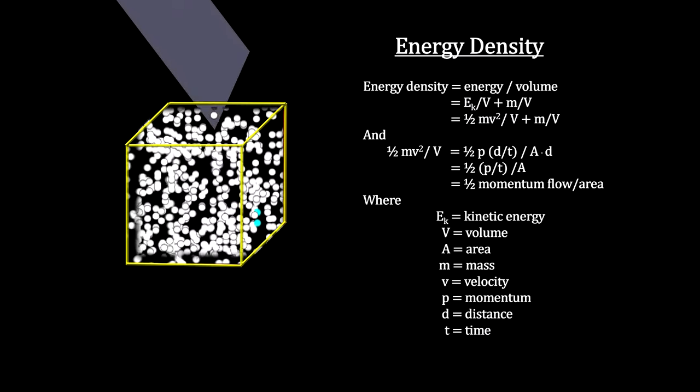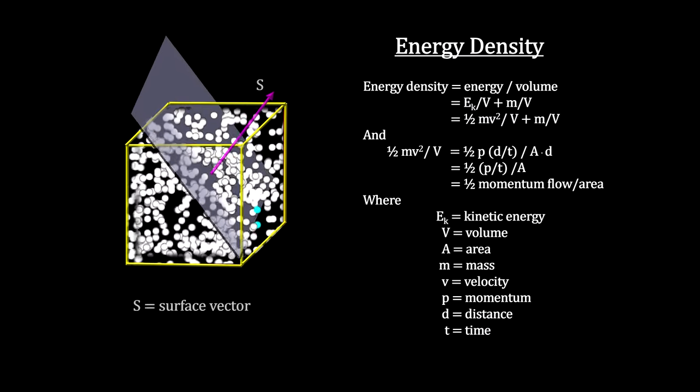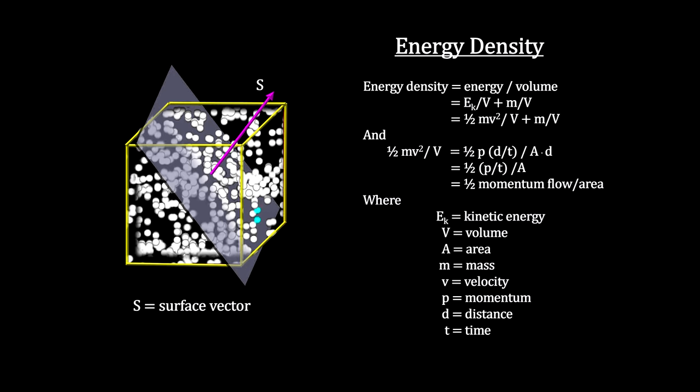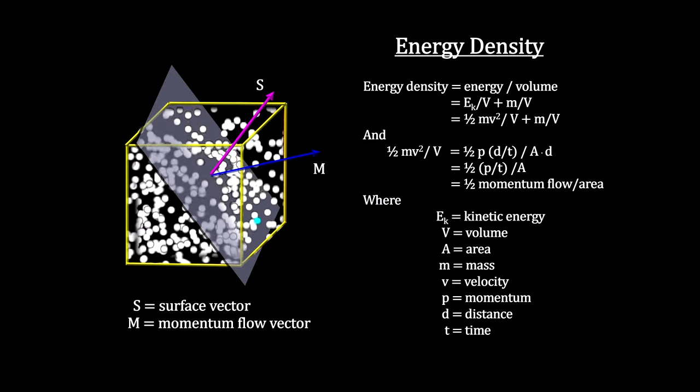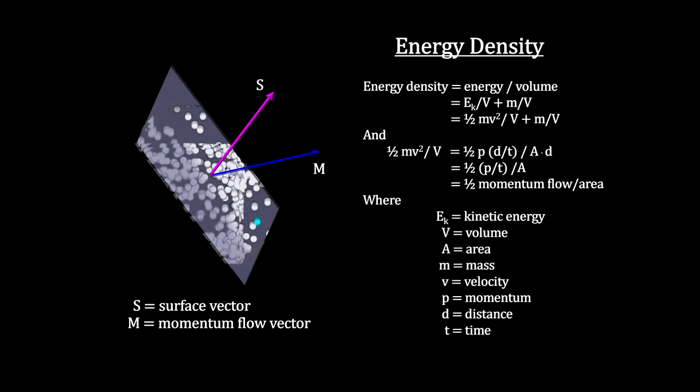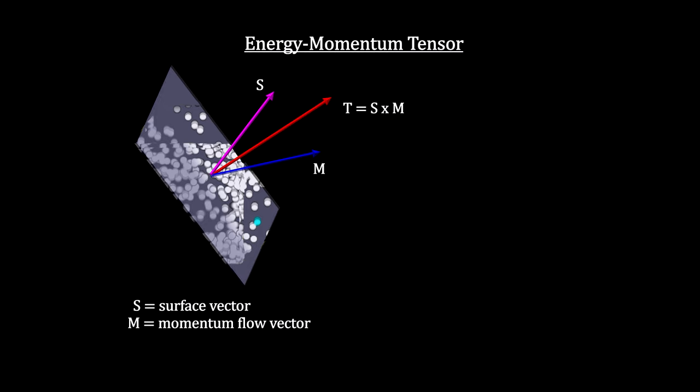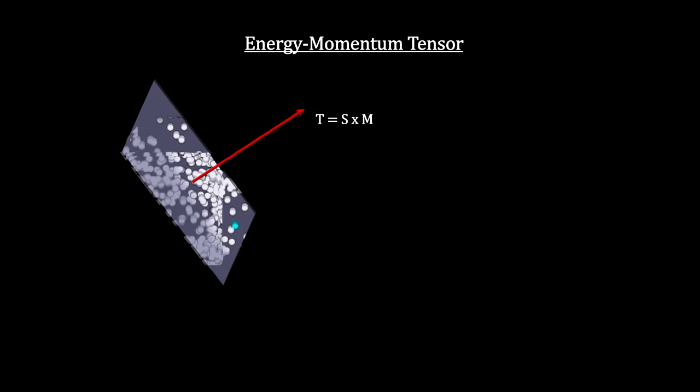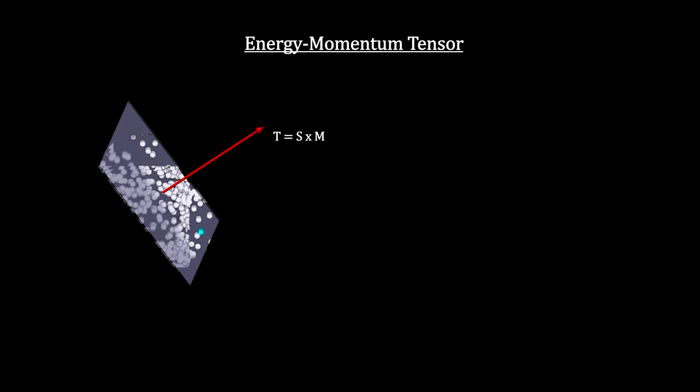So in addition to calculating the mass-energy density of a volume of space, we need to account for the flow of energy through each surface of the volume. This information can be packed into a 4x4 matrix known as the energy-momentum tensor, or stress-energy tensor.